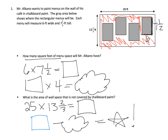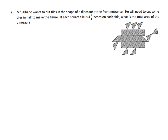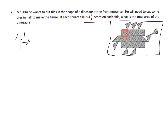Mr. Albano wants to put tiles in the shape of a dinosaur at the front entrance. He'll need to cut some tiles in half to make the figure. Each square tile is 4 and a quarter inches on each side. To find the total area of the dinosaur, first find the area of one tile: 4 and a quarter times 4 and a quarter. Even the triangle pieces are part of a square, which is why we multiply 4 and a quarter times 4 and a quarter.